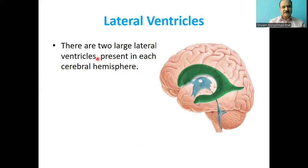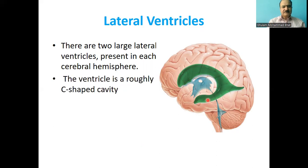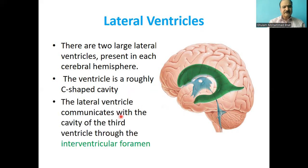There are two large lateral ventricles, one present in each cerebral hemisphere. The ventricle is roughly C-shaped. The lateral ventricle communicates with the cavity of the third ventricle through the interventricular foramen of Monro.